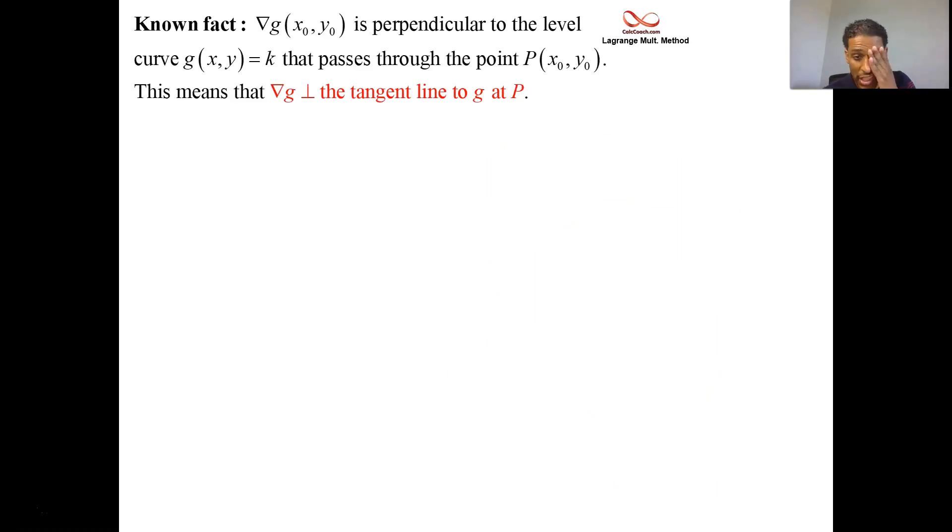Now, we know that the gradient of g is perpendicular to the level curve g = k. And at this point we're interested in x₀, y₀—that's where it happens at. Now we're going to show that the gradient of f is also perpendicular as well to that tangent line at that point.